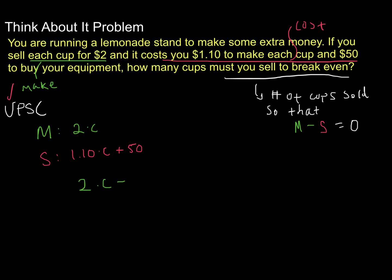Now, be careful, we're subtracting all of this. So it's in parentheses, 1.10 times C plus 50, and that needs to equal zero. So now we can go through and solve, and the only sort of tricky thing is that we make sure we distribute the negative inside, so we can rewrite this as 2 times C minus 1.10 times C minus 50, right? We're subtracting this whole piece, so each part of these, each of these needs to be subtracted from what we make.